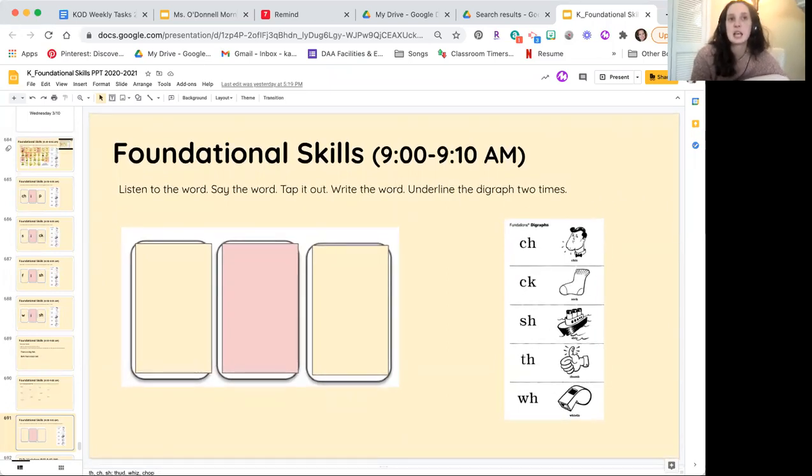The first word is thud. I heard a thud when I knocked something over. Thud. Can you say the word? Okay, let's tap it out. Ready? Thud. Your turn. Okay, let's write down the sounds that we heard in thud. Thud. You write that down first. Okay, let's see if you get it. Ready?